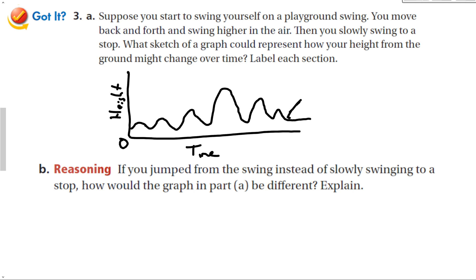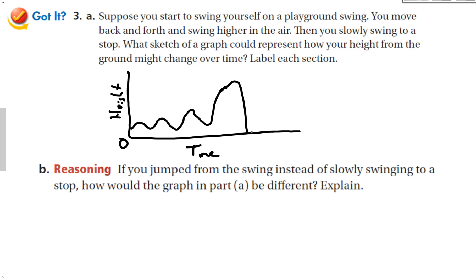If you jump from the swing instead of slowly swinging to a stop, how would the graph be different? At the top of your swing, your height would go a little bit higher — you get up into the air — and then drop back down to the ground suddenly. Depending on the situation, we can model our graphs to tell a story or make a picture.